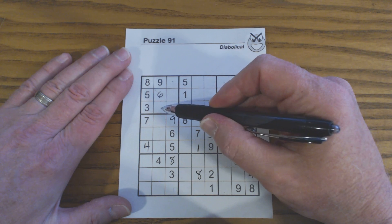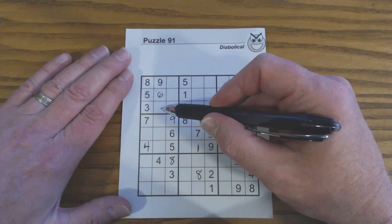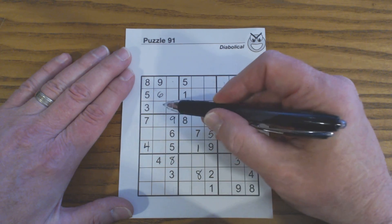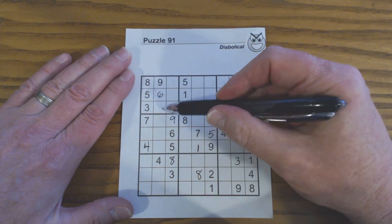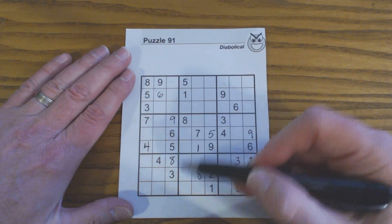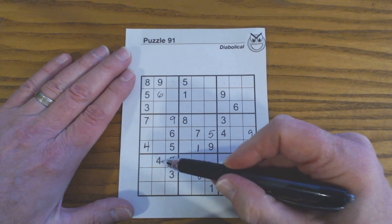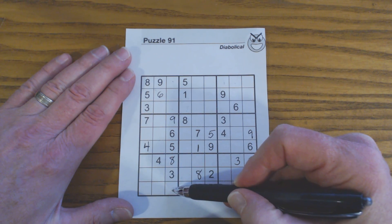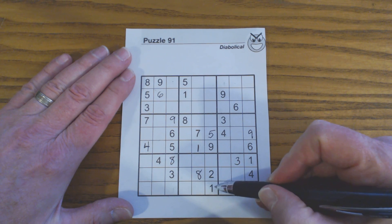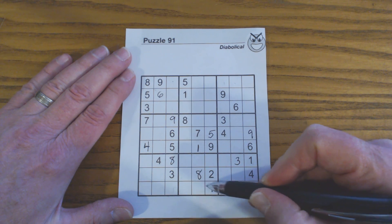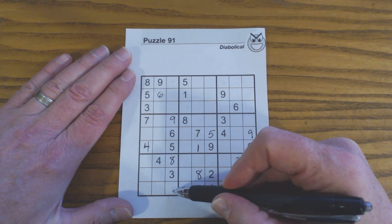So let's look at this cell right here and see what numbers we can eliminate. Well, there's a 4 here, so that has to be a 1, 2, or 7. But down here, there's a 4 here, so that can be 1, 2, or 7. But we also notice there's a 1 here, so that can only be 2 or 7.